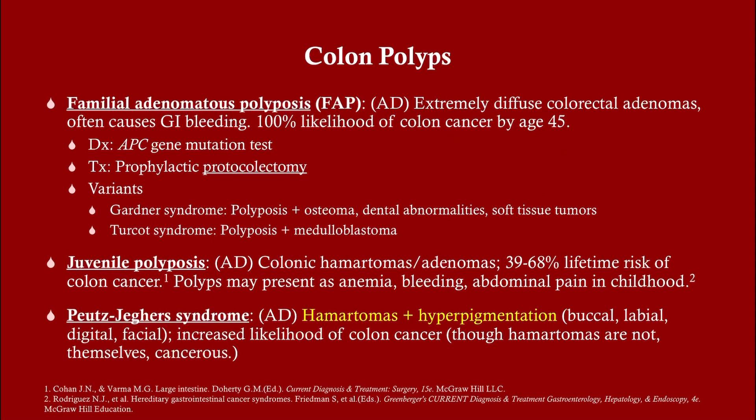There are a few different familial disorders that raise your risk of colon polyps. Familial adenomatous polyposis: these patients always go on to develop colon cancer, so once we diagnose this we remove the colon. Juvenile polyposis is not called that because it happens only in children — it's called juvenile polyposis because the polyps themselves are called juvenile polyps. And Peutz-Jeghers syndrome involves hamartomas and hyperpigmentation, with hamartomas occurring in the colon.